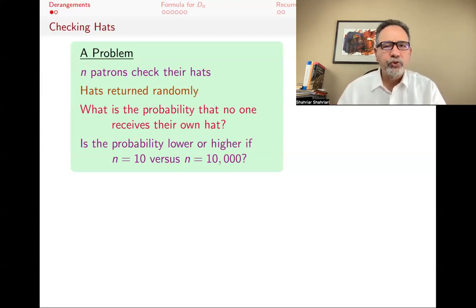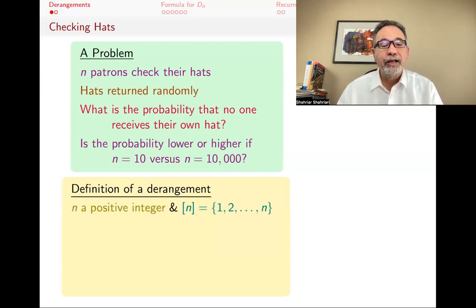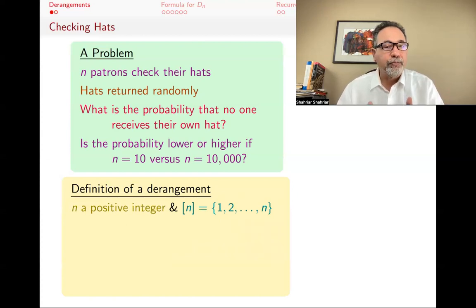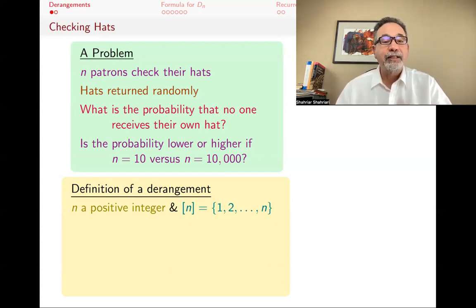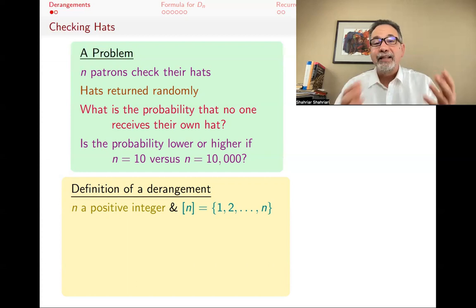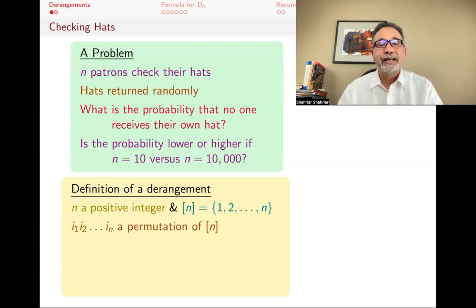To translate this problem to mathematics, we define something called the derangement. So if you start with a positive integer, the bracket N always stands for our typical set with N elements — it's 1 through N — but we really use it for any set with N elements. In this case, it's the N people that are checking their hats. And we have a permutation of that.